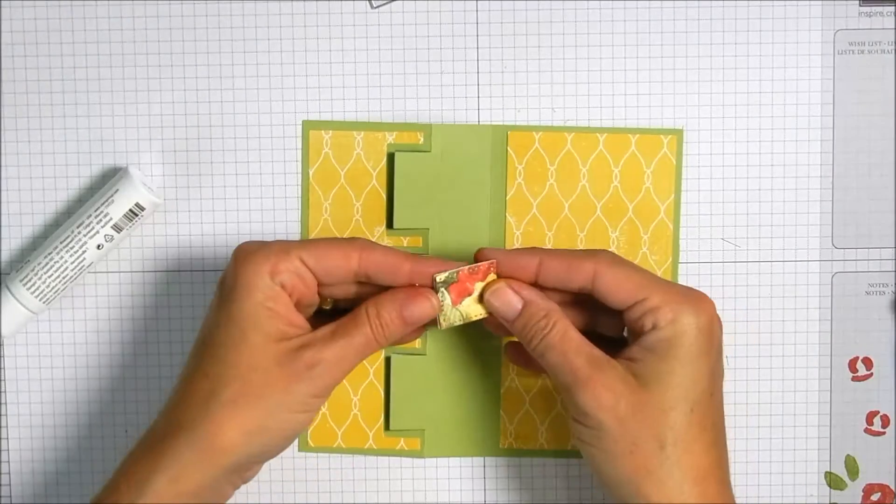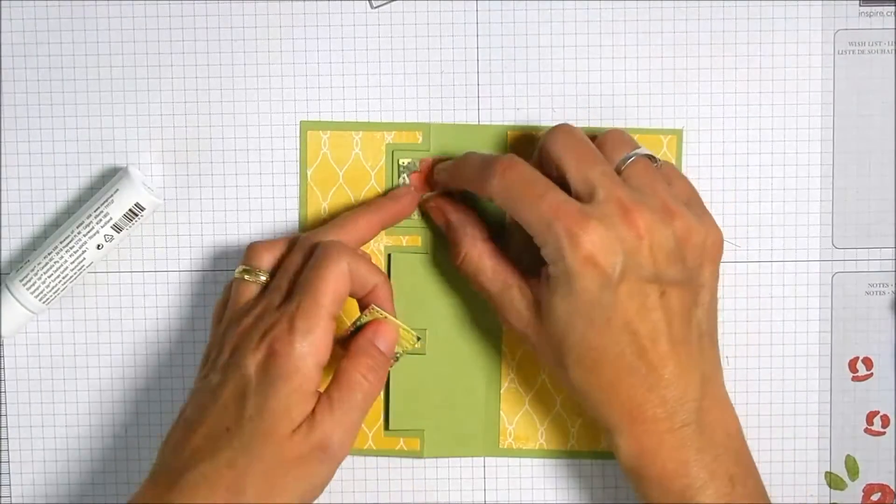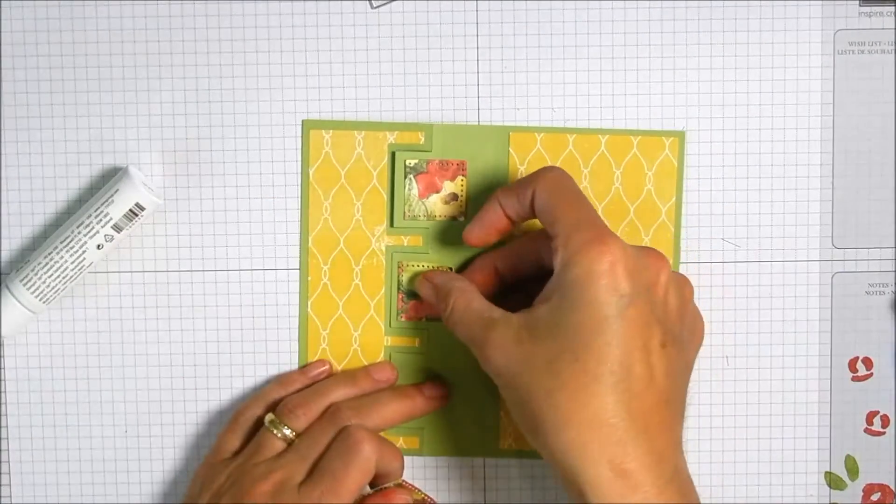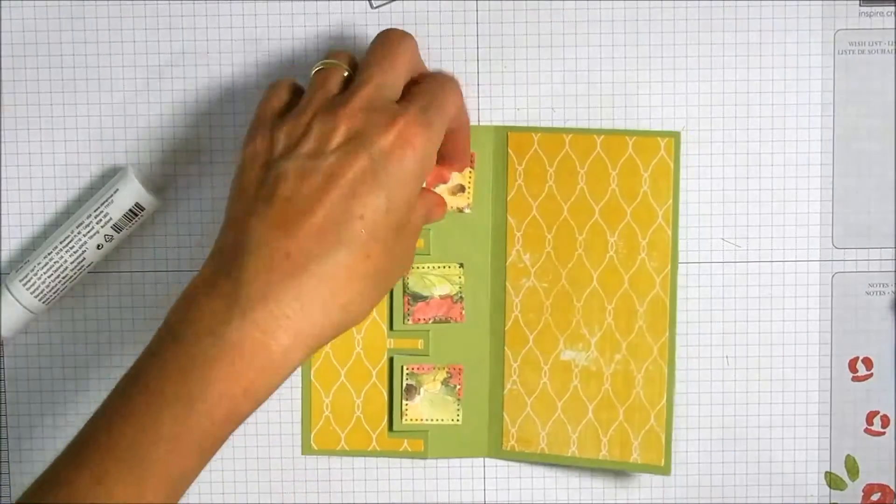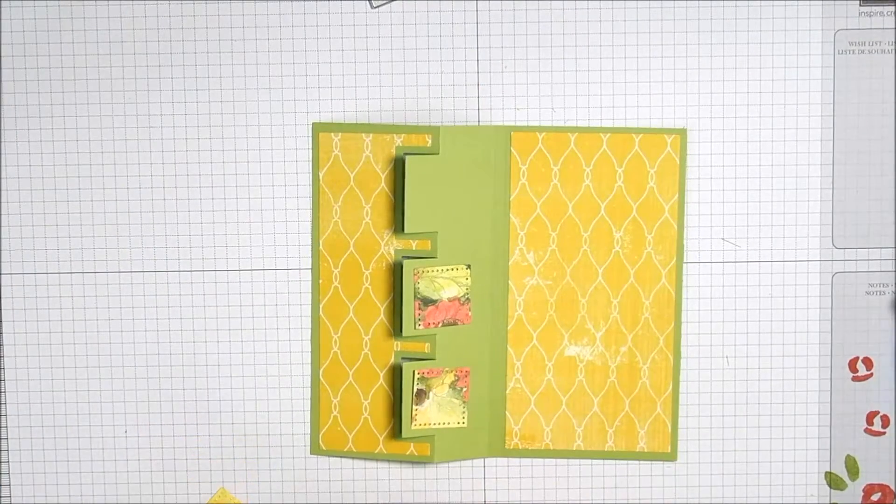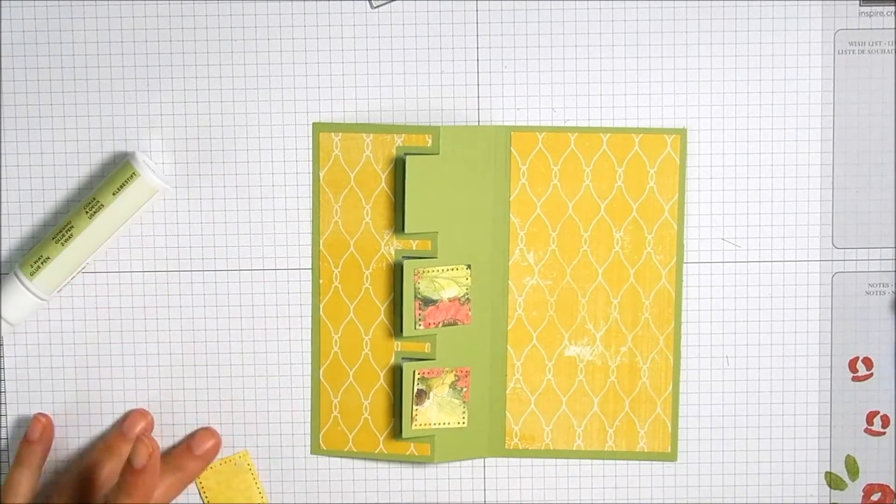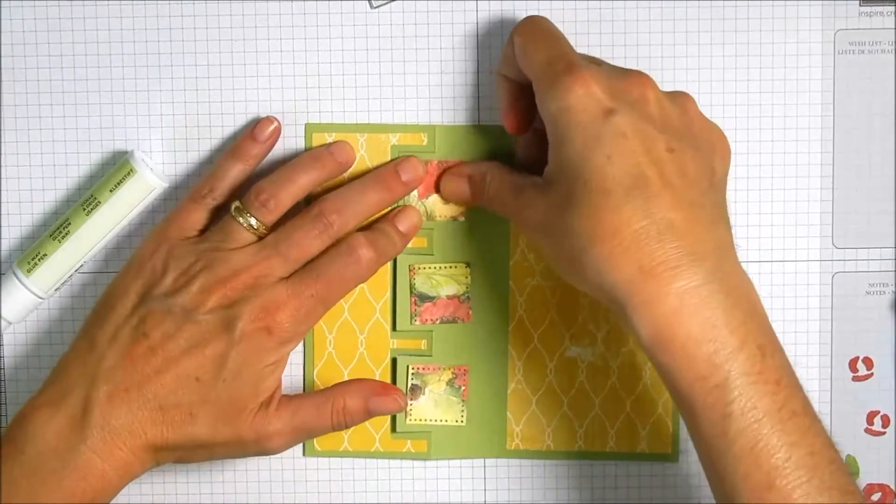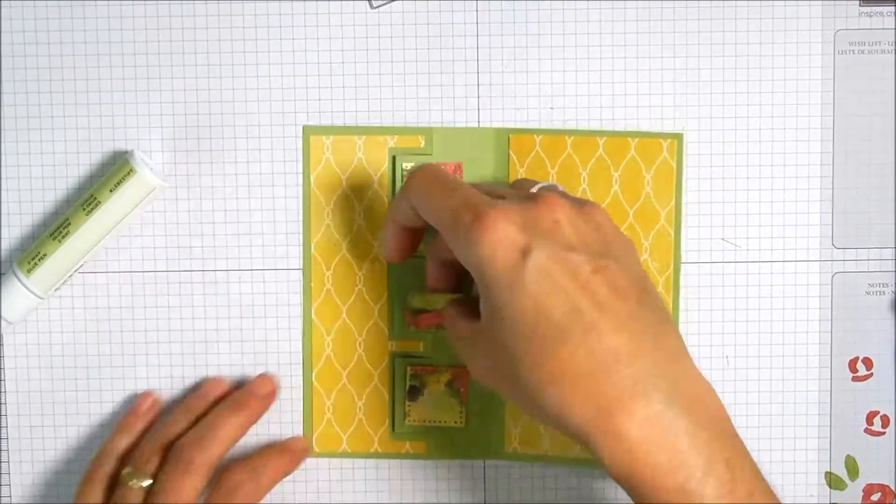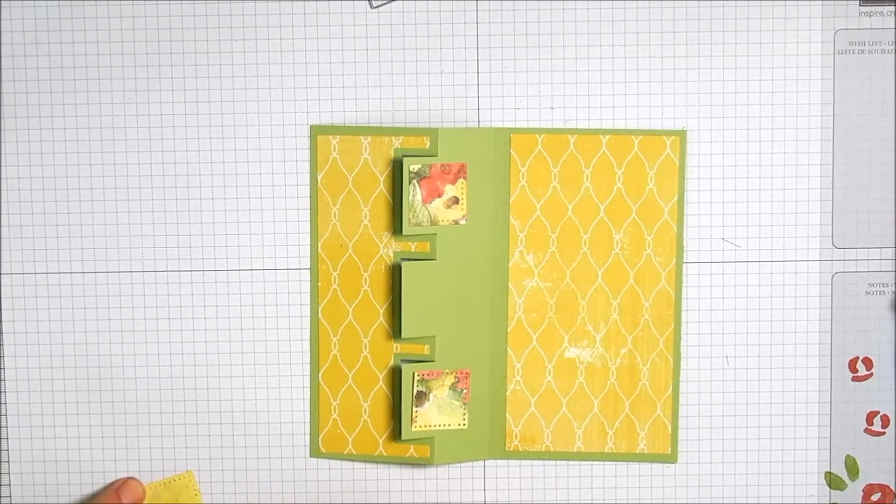Hold those down for a couple of seconds to make sure they're good and adhered across the front. On the inside again I did cut some of the floral patterned paper just to again put a design in there and give it a little bit more interest. I'm adhering those again with the two-way glue pen.